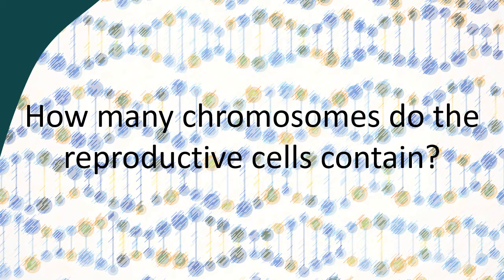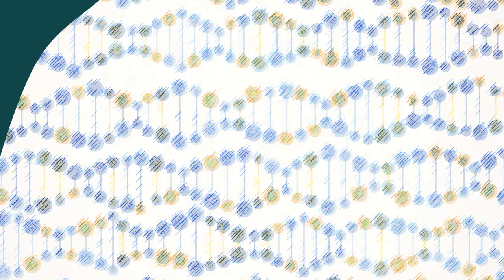Question two. Pause the video now to have a go at question two. How many chromosomes do the reproductive cells contain? The answer is 23.